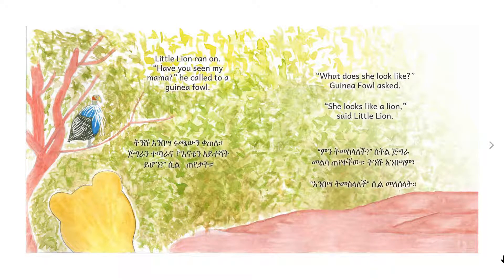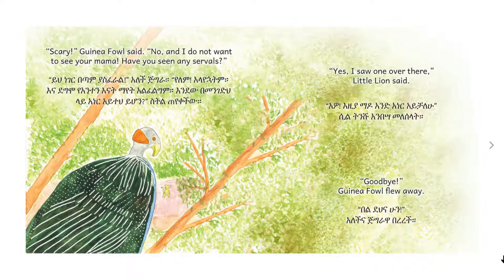Have you seen my mama? He called to a guinea fowl. What does she look like? Guinea fowl asked. She looks like a lion, said Little Lion. Scary, guinea fowl said. No, and I do not want to see your mama. Have you seen any servals? Yes, I saw one over there, Little Lion said. Goodbye. Guinea fowl flew away.